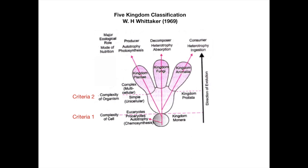Multicellular eukaryotes are further classified based on the third criteria: the mode of nutrition. If the multicellular organism is autotrophic — meaning the organism produces its own food through photosynthesis — it is placed in kingdom Plantae. Therefore kingdom Plantae contains organisms which are eukaryotes, multicellular, and photosynthetic. Their major ecological role is as producers of food.